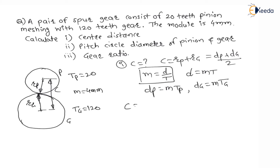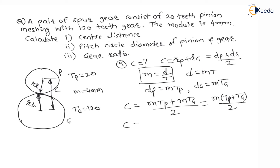Therefore, center distance is equal to (module × T_P + module × T_G) / 2, which simplifies to module × (T_P + T_G) / 2. Substituting values: C = 4 × (20 + 120) / 2 = 4 × 140 / 2 = 280 mm.